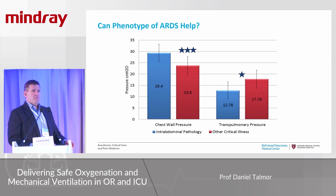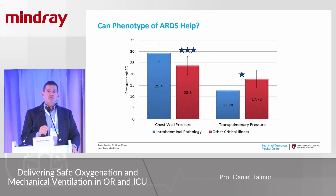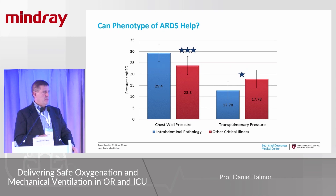Can the patient's phenotype help? Maybe. Patients with intra-abdominal pathologies had a lower esophageal pressure and lower transpulmonary pressure during the recruitment maneuver. Those patients would probably benefit more from a recruitment maneuver — they are more recruitable and less likely to over-distend.